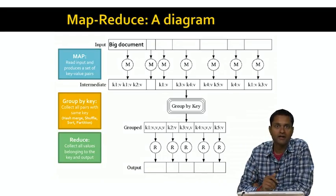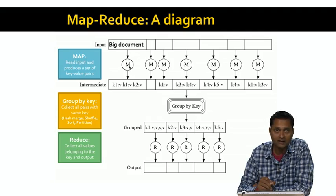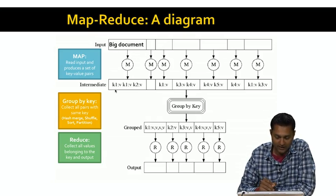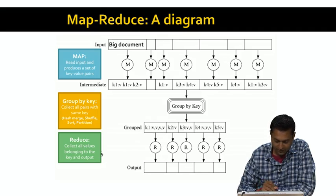Just to refresh your memory, a simple MapReduce process has three steps. In the Map step, you take a big document which is divided into chunks, and you run a Map process on each chunk. The Map process goes through each record in that chunk and outputs intermediate key-value pairs. In the second step, which is a group-by step, you group by key and bring together all the values for the same key. And in the third step, which is a Reduce step, you apply a reducer to each intermediate key-value pair set and create a final output.